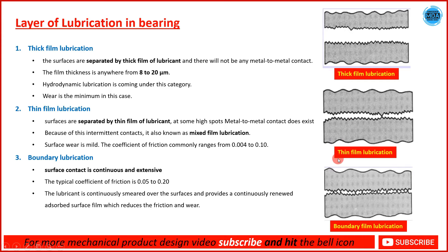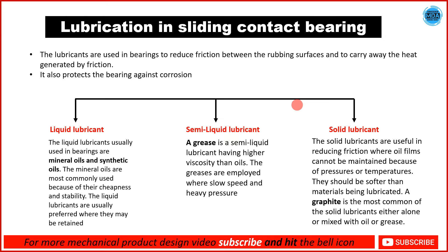These are the three layers of lubrication used in sliding contact bearings, and based on that the types of sliding contact bearings are divided. The purpose of lubrication is to reduce the friction between the shaft surface and the bearing surface, to carry away the heat generated by friction, and also to protect the bearing against corrosion.